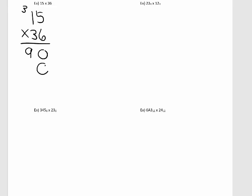We need the 0 for the placeholder. So now take 3 times 5, that's 15. The 5 comes down, carry the 1. 1 times 3 is 3, plus 1 is 4. And now we add: 0 plus 0 is 0. 9 plus 5, that's 14 — bring down the 4, carry the 1. And 1 plus 4 is 5. So 15 times 36 is 540.